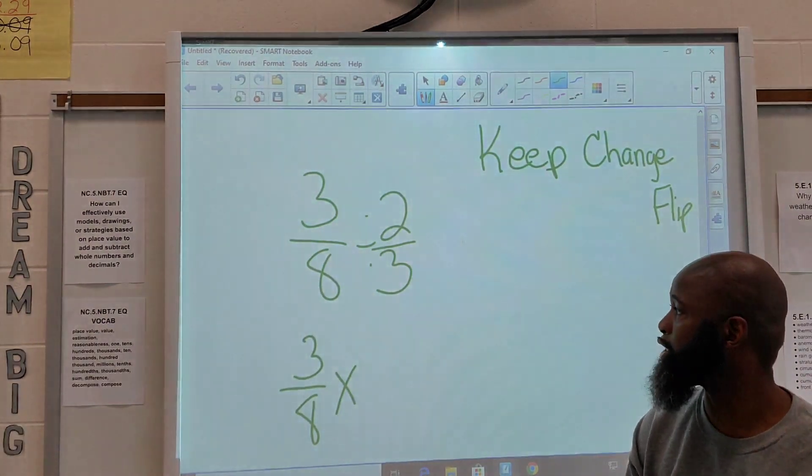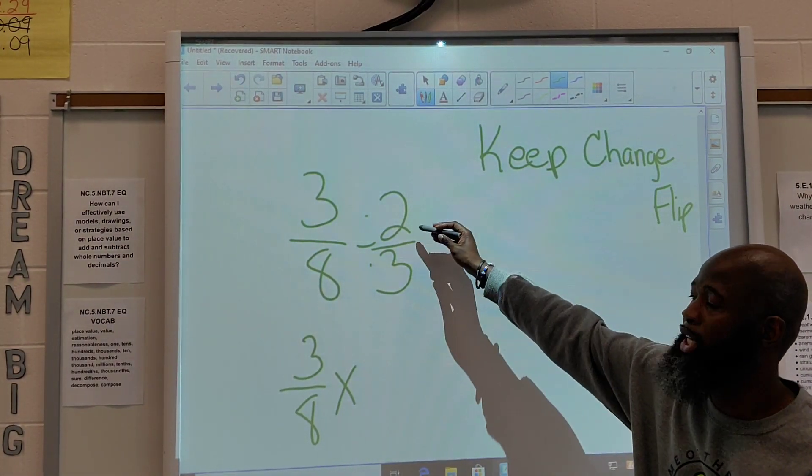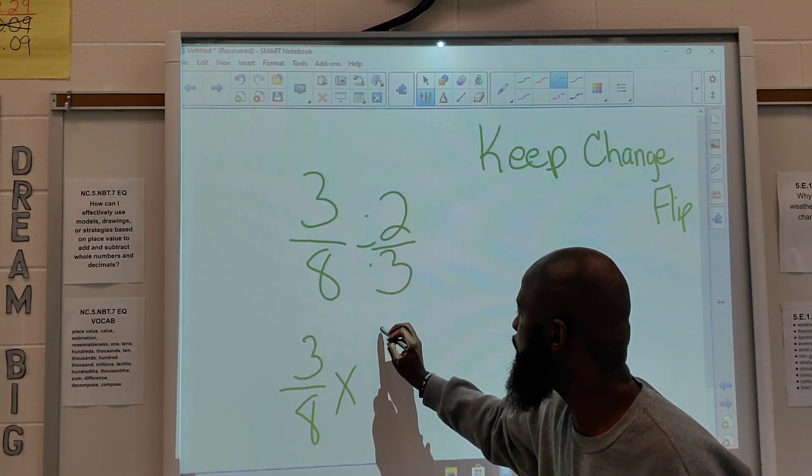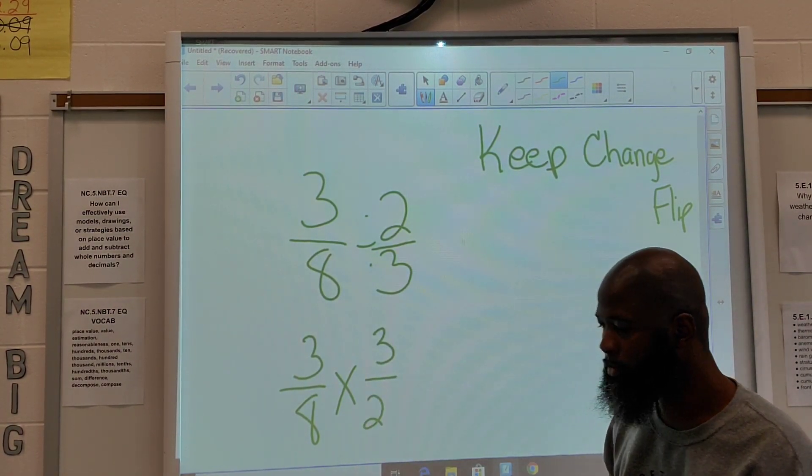We're going to change our division sign to multiplication. And then we're going to flip our last fraction. So, instead of saying 2 thirds, we're going to go 3 over 2.